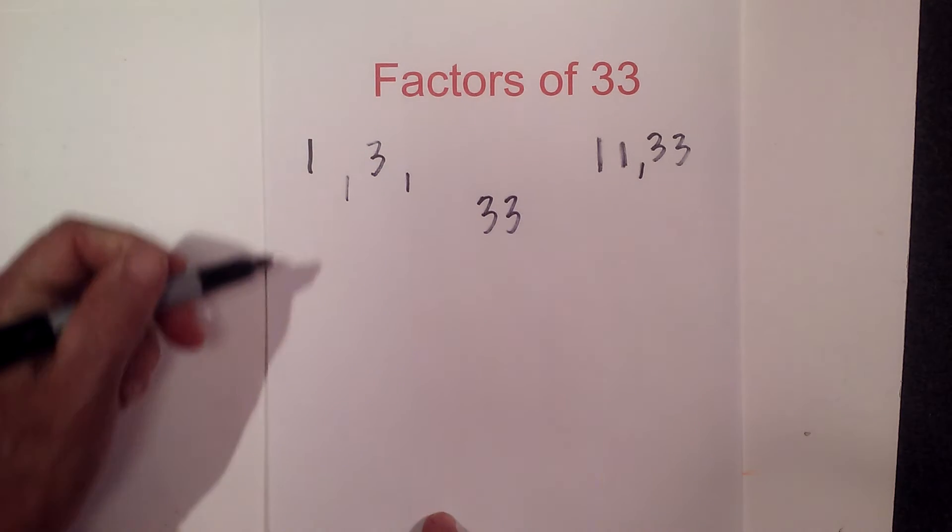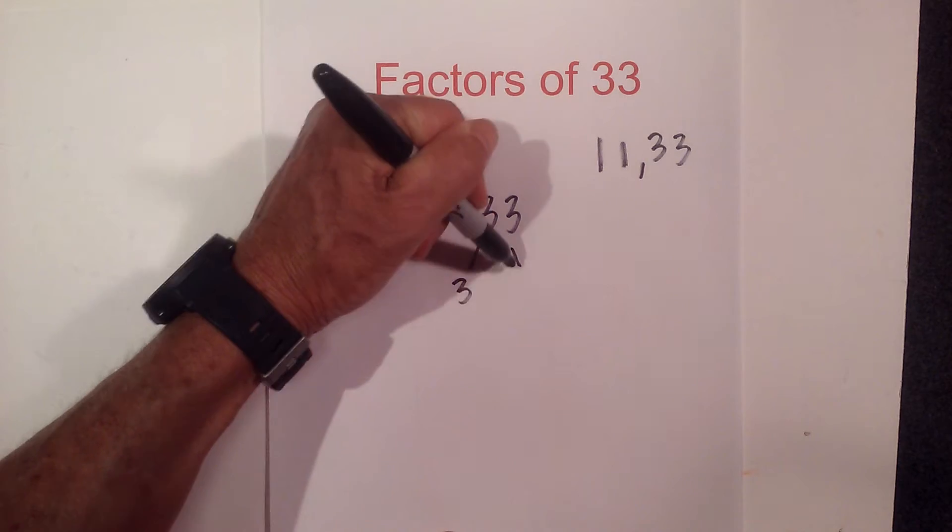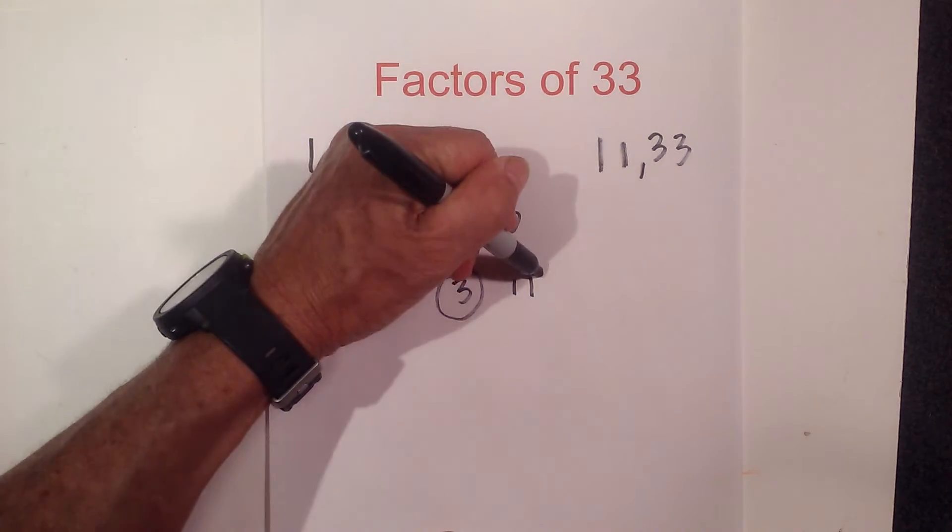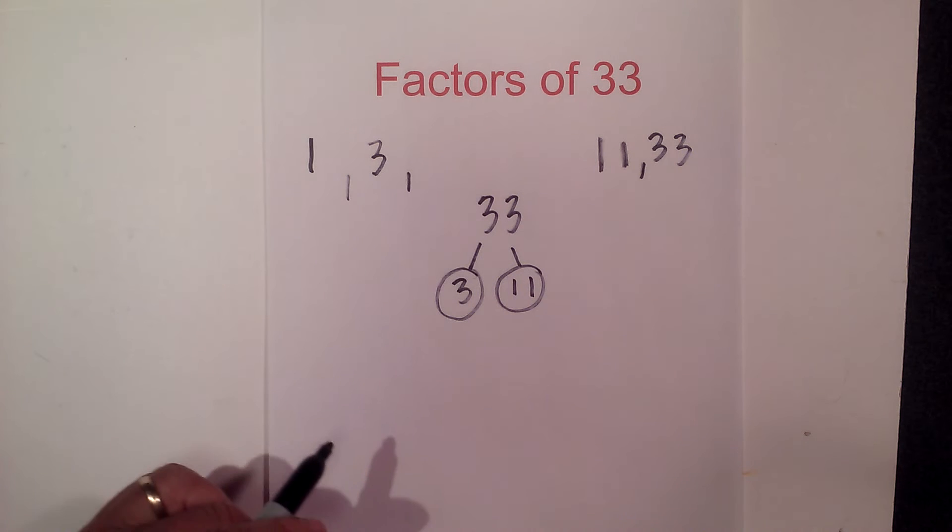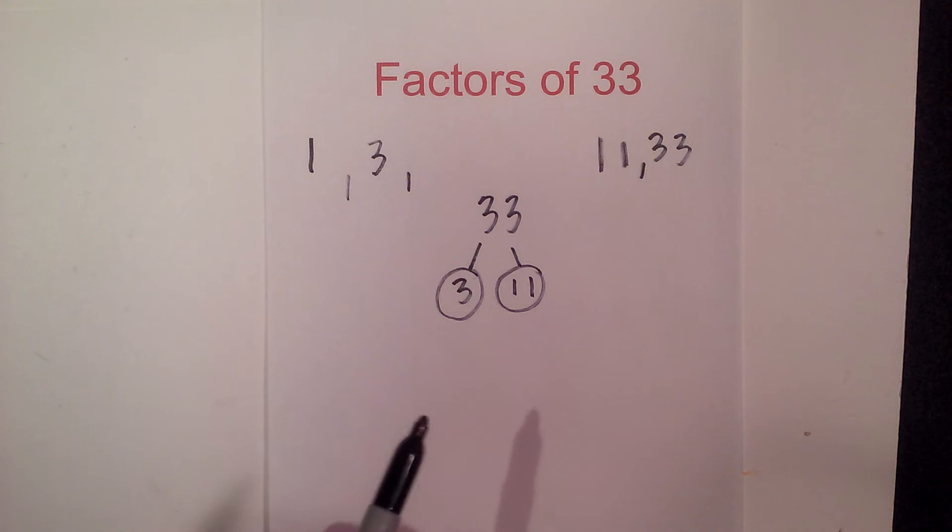Now let's find the prime numbers that multiply together, or the prime factorization of 33. I can go 3 times 11, and I'm gonna circle 3 and 11 because they both are prime. So the prime factors of 33 are 3 and 11.